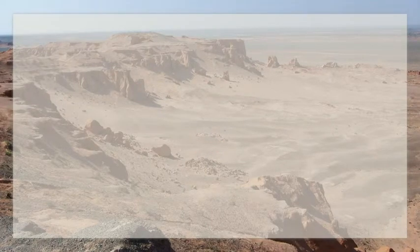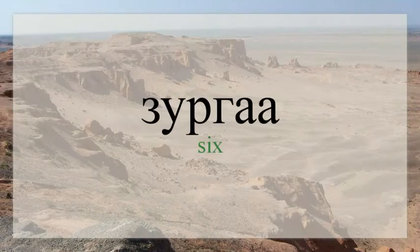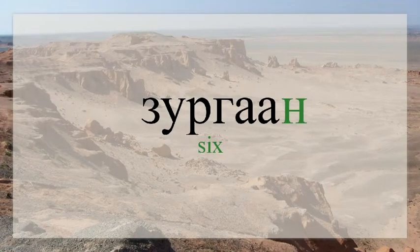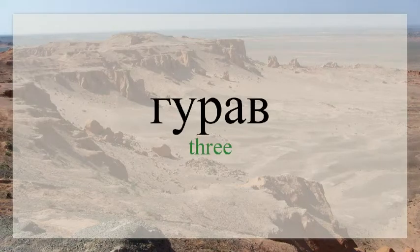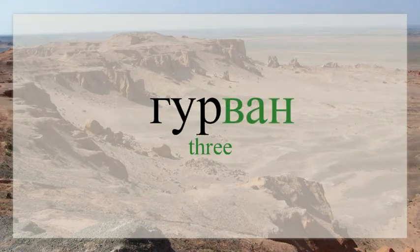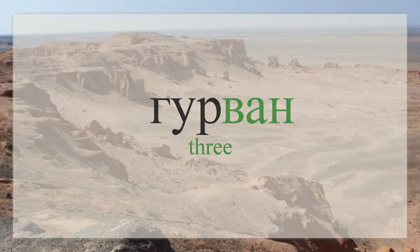There are a few special rules in constructing numbers you must learn. Mongolian numbers require you to modify the end of a number by adding an N sound whenever it precedes a noun or another number word. In some cases there is also a need to reverse the order of the final few letters. For example, one form becomes another by reversing the order of the final letters and adding an N.